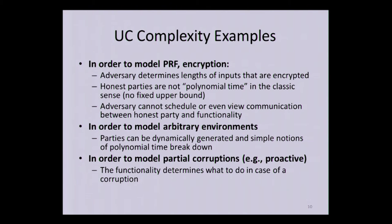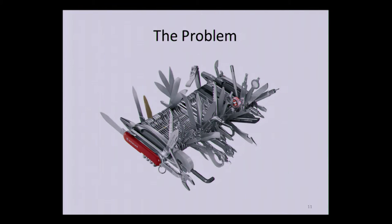You also want to model partial corruptions, and sometimes you do communicate externally with the ideal functionality and sometimes you don't. The result of all this is: I just want a knife and a fork, but this is what I have. In fact, doing secure computation even in the standalone world is not simple — it already has a plier, a screwdriver, and a magnifying glass. This is the byproduct of capturing all that generality — not a criticism, but a consequence.